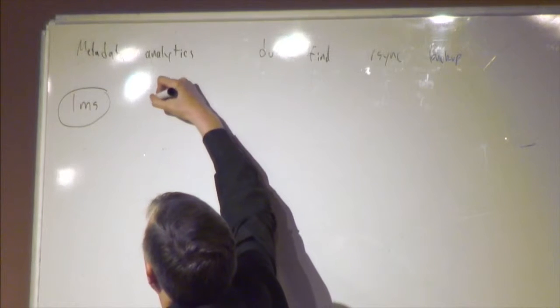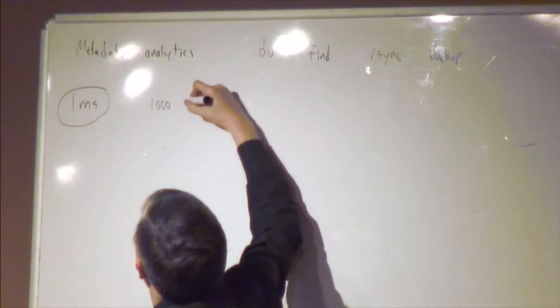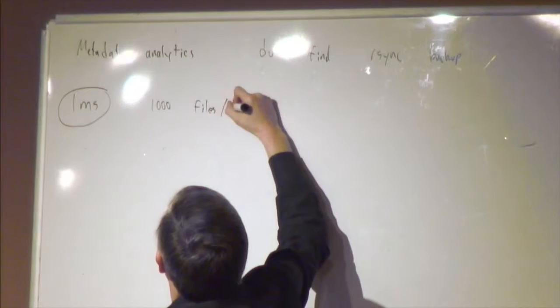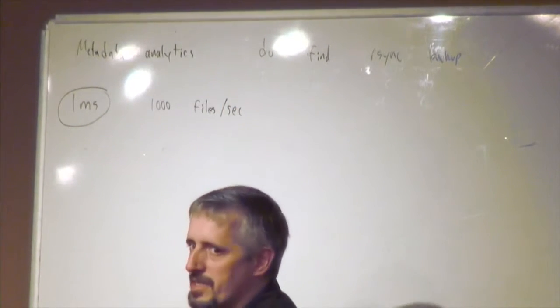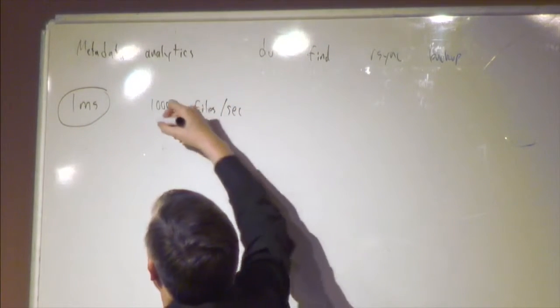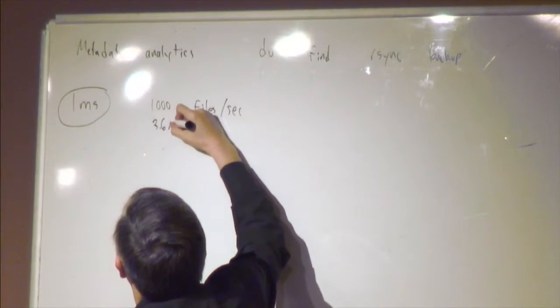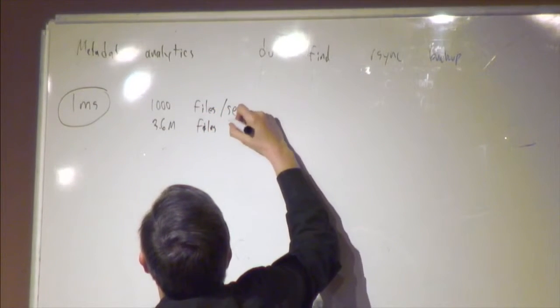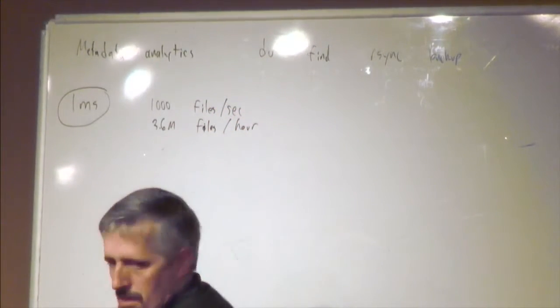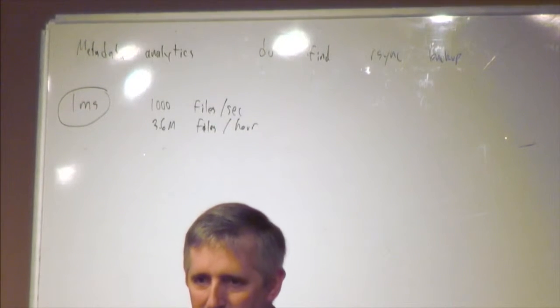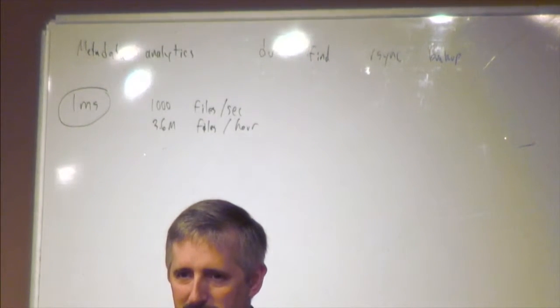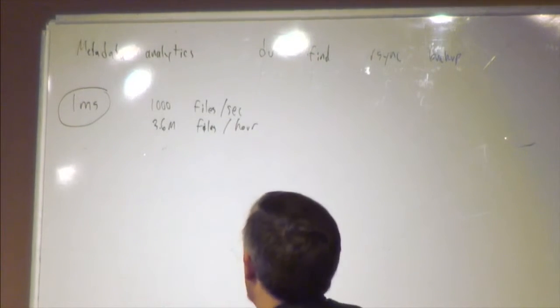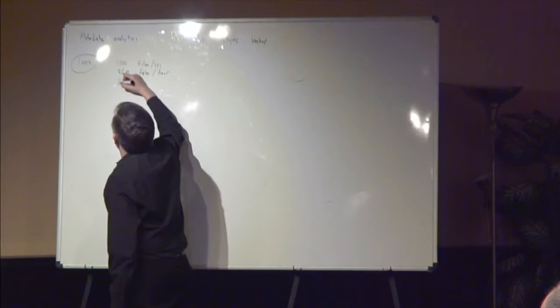That actually means a thousand files per second you can access and stat. That's 3.6 million files per hour, and I'd be really happy if most scale-up NASs could do 3.6 million files per hour metadata scan. That would mean my incremental backup would only take a day. That's 86 million files per day.